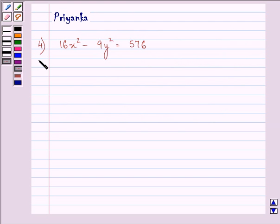Now here, we are given the equation of the hyperbola as 16x² - 9y² = 576.